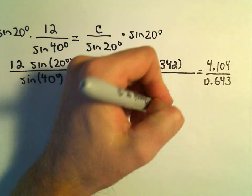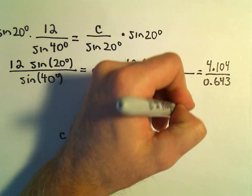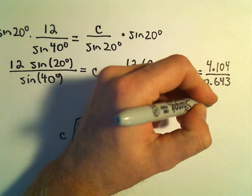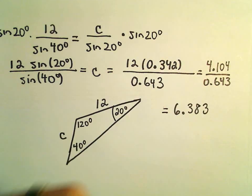So 4.104 divided by 0.643. I'm getting this to be roughly 6.38, and after rounding, 6.383.